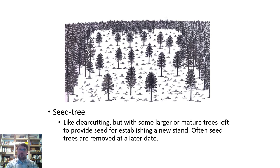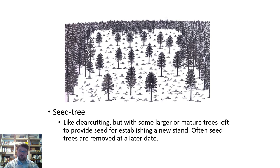If natural reseeding takes 10 years, you might be 40 years out instead of 30 before you can harvest. It's kind of like clear cutting because you're cutting most trees and leaving big ones that are good seed producers to reseed the landscape. Once you have a good amount of germinated trees, you come in and cut the seed trees down so they're not competing against the seedlings — otherwise it takes even longer for that region to reach maturity.